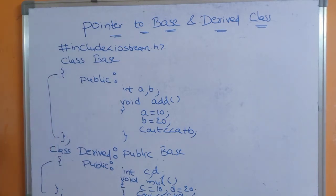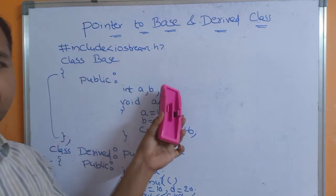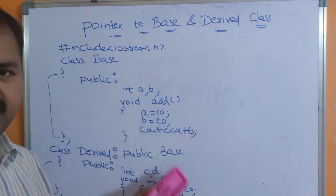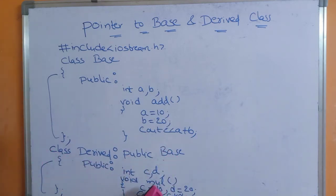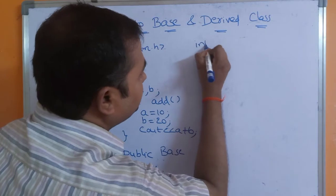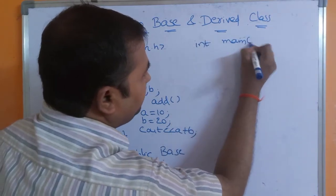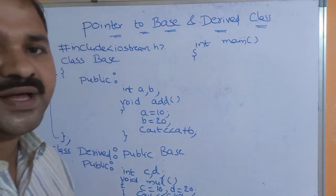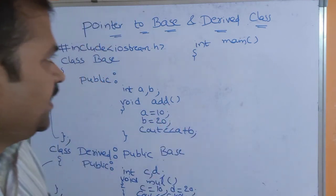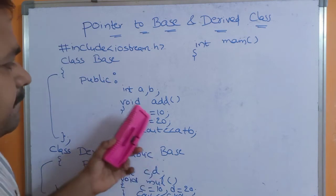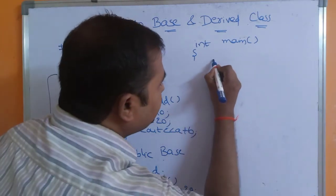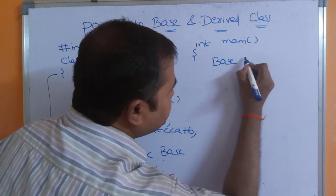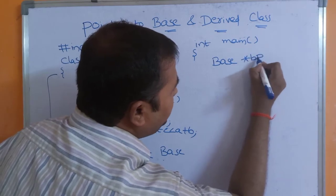So we have two classes. Under the base class we have a and b as the member variables, and 'add' is the member function. Under the derived class we have c and d as the member variables, and 'mul' is the member function. Now let us have the main function. Int main — if the program is successfully compiled and executed, the main function returns a value called 0. Let us focus on how we can access base class members with the help of a pointer variable.